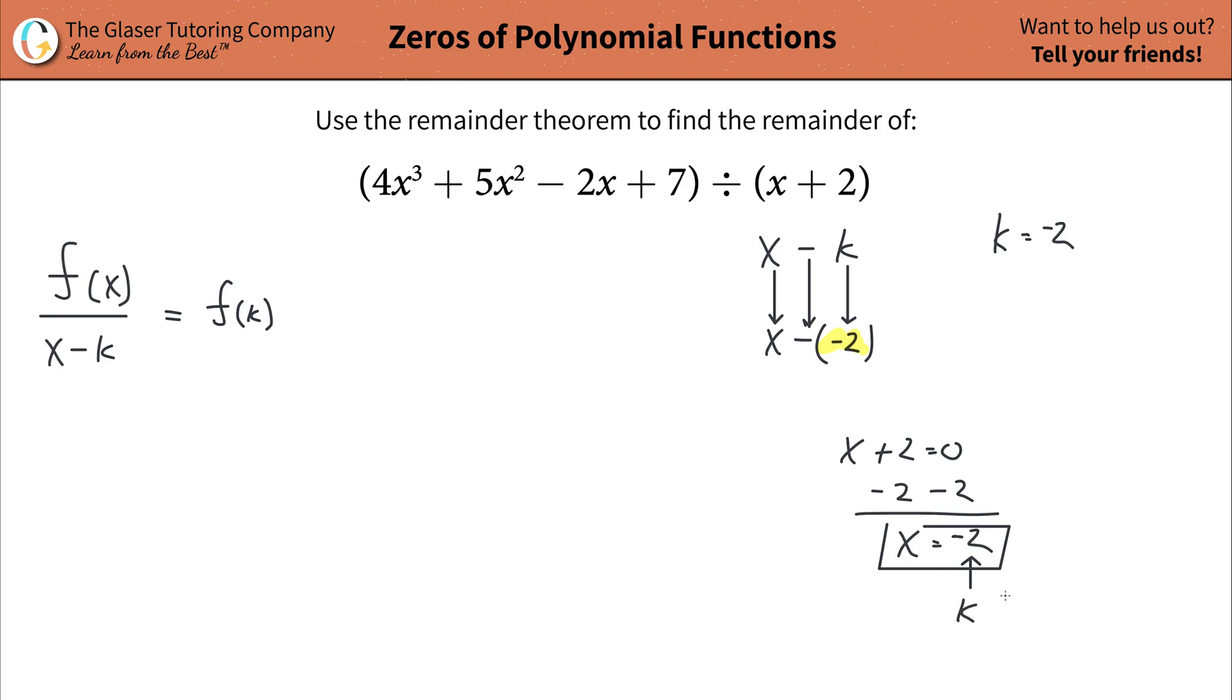So this is going to be the value of k. Now notice how it's the same, still negative two.